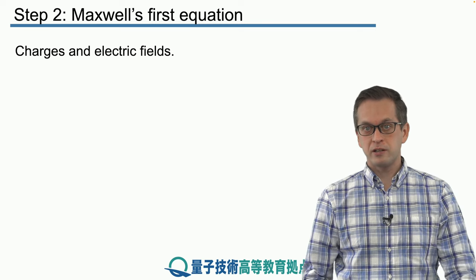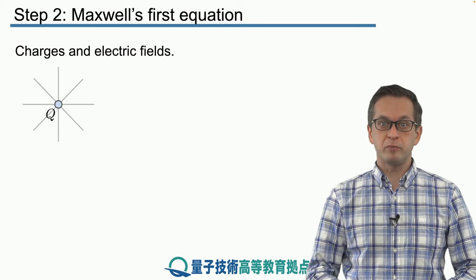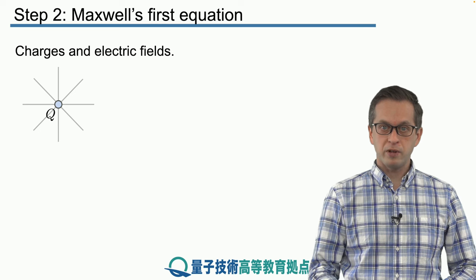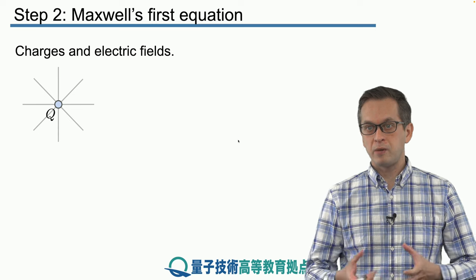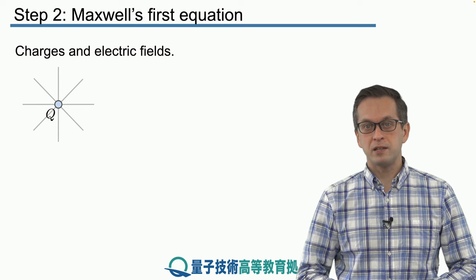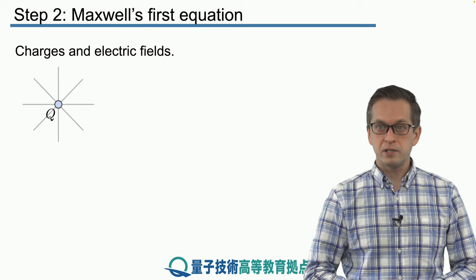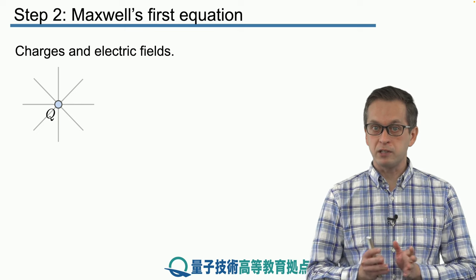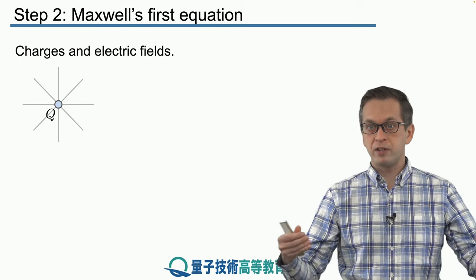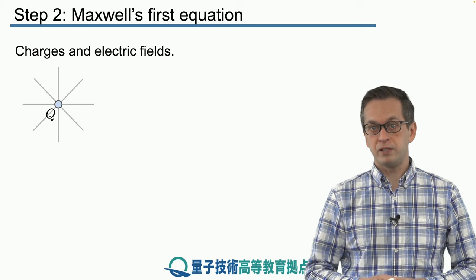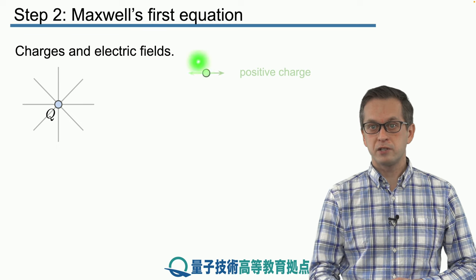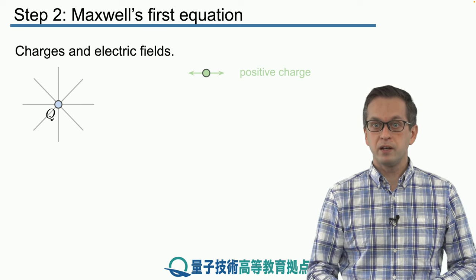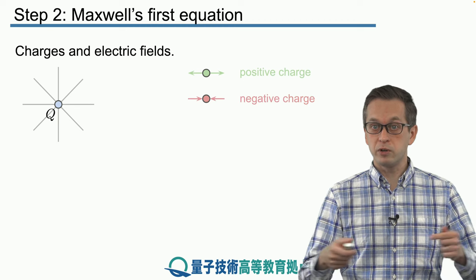Let's consider a single charge and the electric field that it produces. Here we've got our point charge Q. It doesn't matter whether it's positive or negative. The electric field it produces can be represented by lines traveling directly out if the charge is positive, or traveling directly towards the charge if it's negative. Positive charges always have electric field lines going away from them, and negative charges always have field lines going towards them.